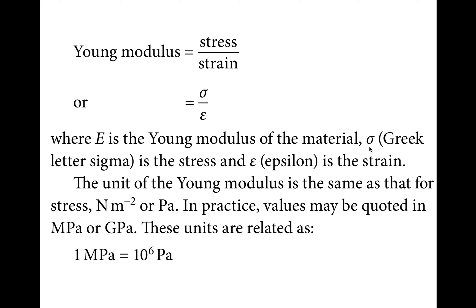The symbols sigma (σ) and epsilon (ε) are used for stress and strain respectively, though these rarely appear in exams. The unit for Young's modulus is the same as for stress — newtons per meter squared — because strain is dimensionless. Young's modulus can also be expressed in megapascals or gigapascals.